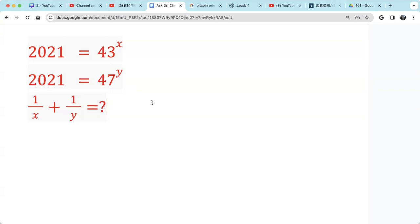So 45 squared, 5 squared is 25, so last two digits are 25. And 45, 40, we have 4 times 5 is 20. So 45 squared is 2025. 2025 minus 4 is 2021.